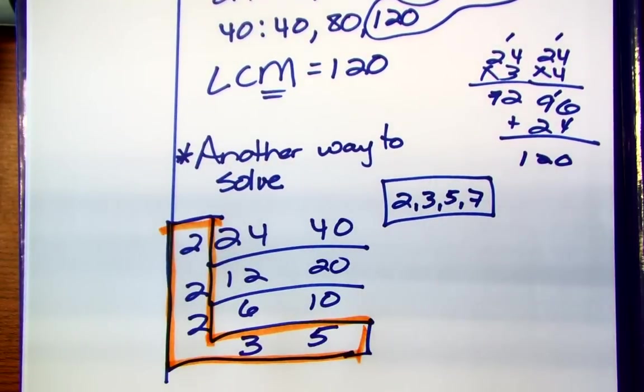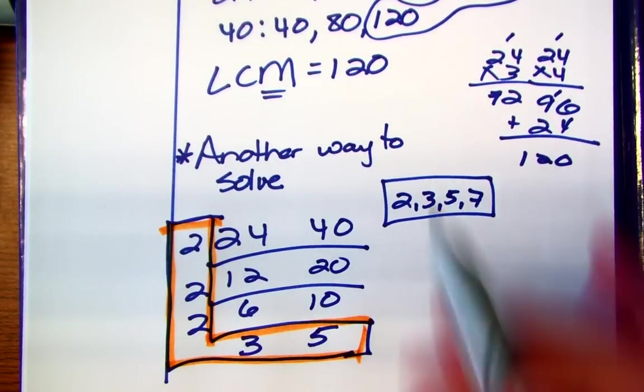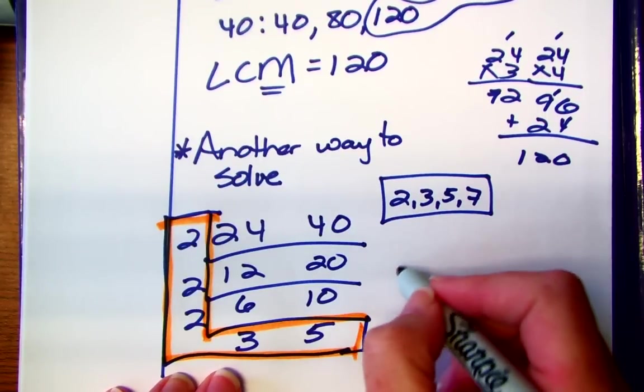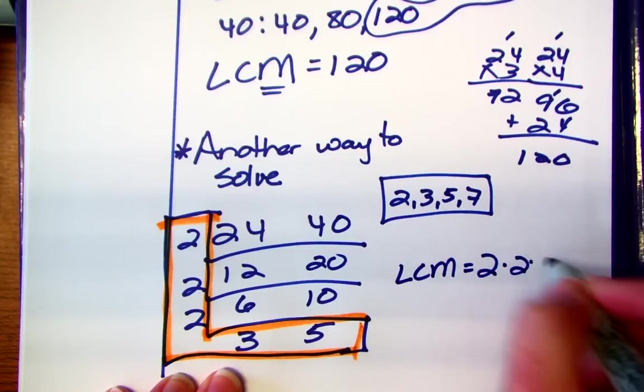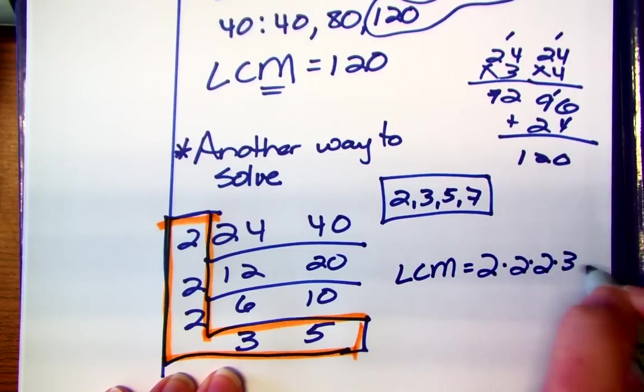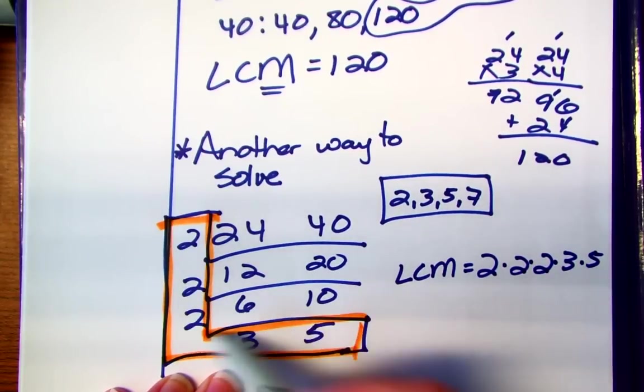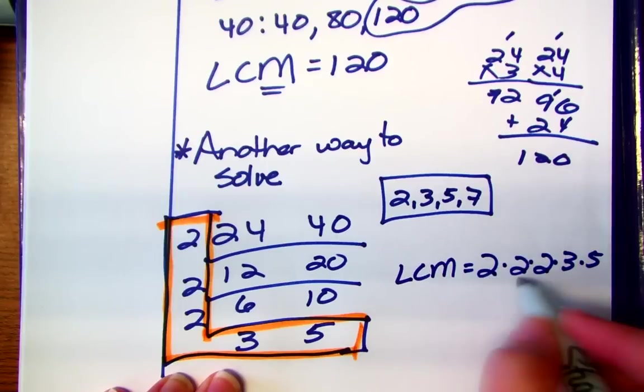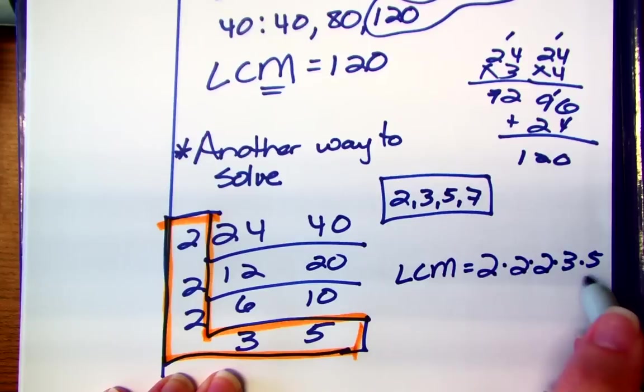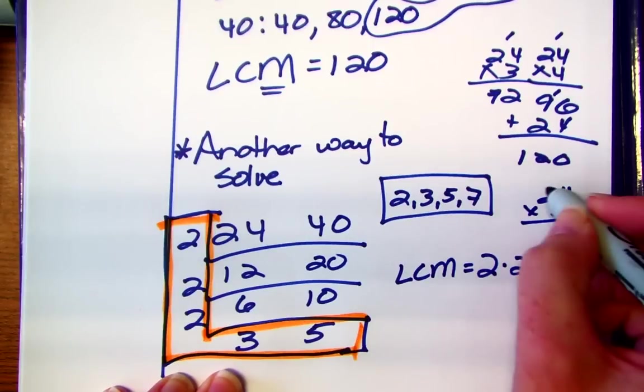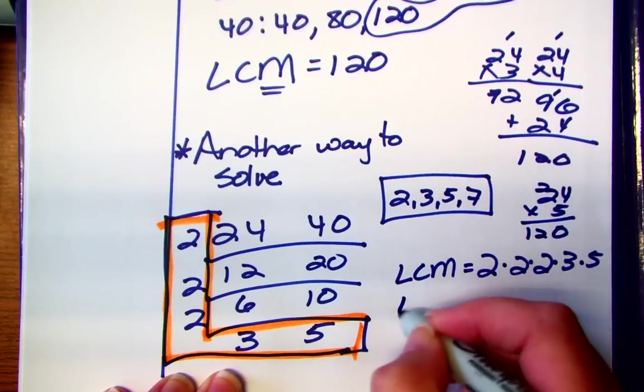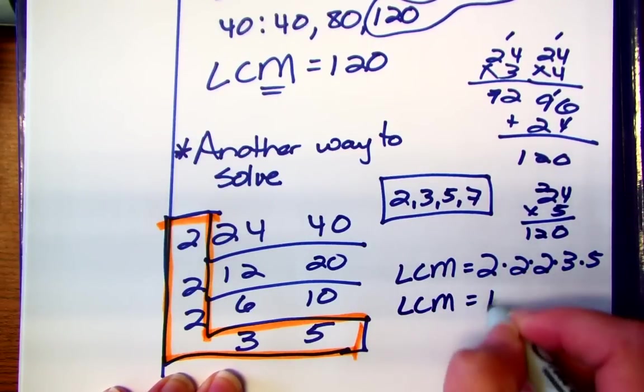And then to find your least common multiple all you need to do is multiply. So you're going to multiply 2 times 2 times 2 times 3 times 5. Notice those are the same numbers right here. 2 times 2 is 4, 4 times 2 is 8, 8 times 3 is 24, 24 times 5. I'm going to just do that off to the side. Oh 120. So my least common multiple is 120.